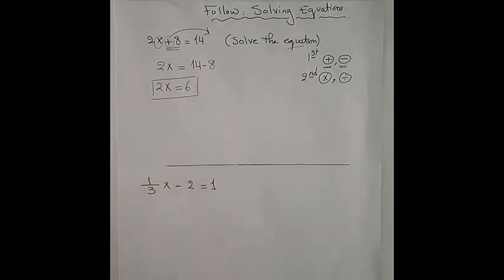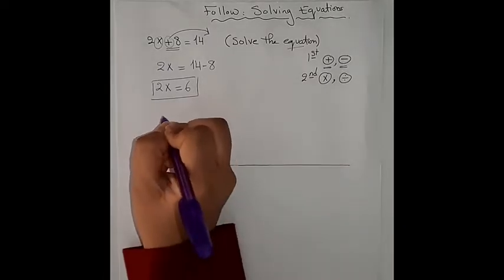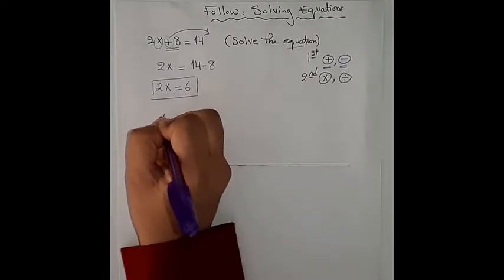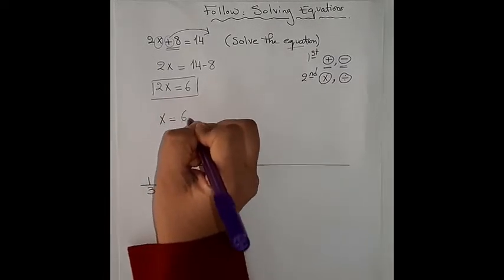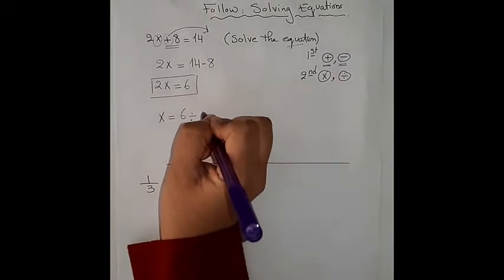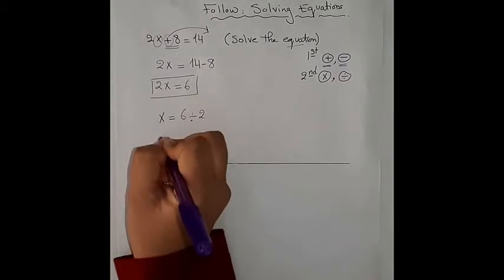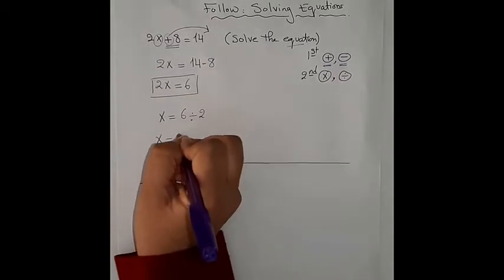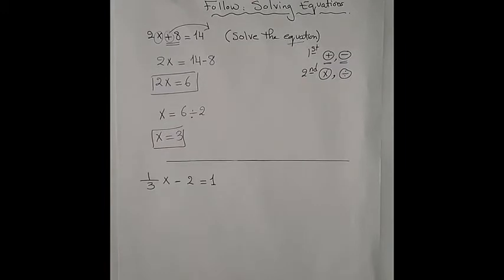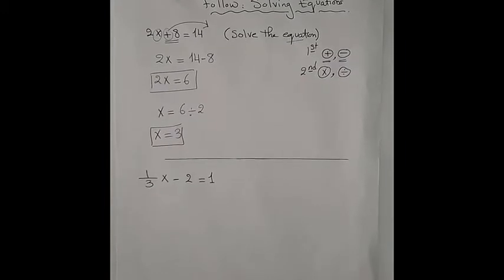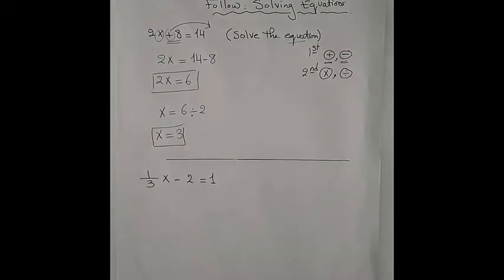Now, how to get the value of x? Here we have 2 multiplied by x, so the inverse operation of multiply is divide. To get the value of x, we have x equals 6 divided by 2, so x equals 3.